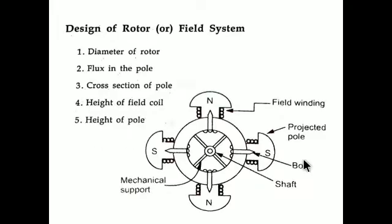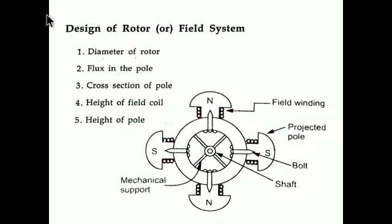The design of a rotor or field system should consider five key titles. These are: the diameter of the rotor, flux in the pole, cross-section area of the pole, height of the field coil, and height of the pole. These five points must be considered for the designing aspect of the rotor.